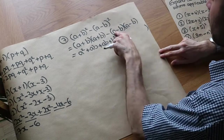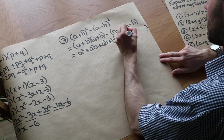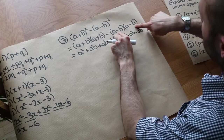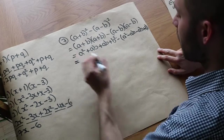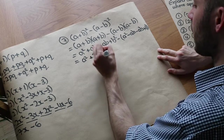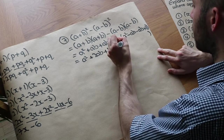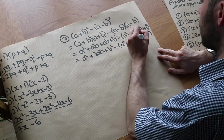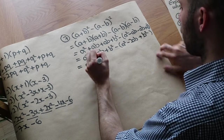Expanding (a − b)(a − b): a times a is a squared. a times minus b is minus ab. Minus b times a is minus ab again. And minus b times minus b: negative times negative is positive, so plus b squared. Simplifying the first expansion: a squared plus 2ab plus b squared. Simplifying the second expansion: a squared minus 2ab plus b squared.